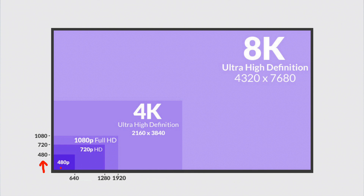Next up is 720p: if you count pixels along the vertical axis and get 720, your screen has HD resolution. One more step up — if you count and get 1080, your screen is Full HD. 1080p is the resolution of something like a Blu-ray disc. All of these numbers refer to the vertical pixel count.